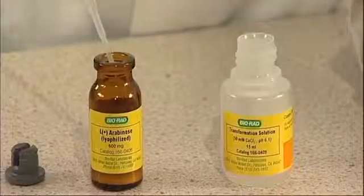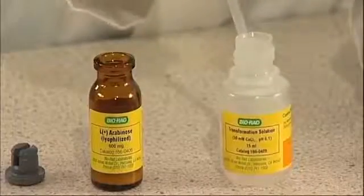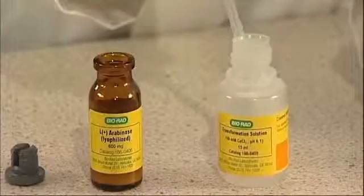With a fresh transfer pipette, rehydrate the arabinose in 3 ml of transformation solution. This will take about 10 minutes to dissolve. You can speed up the process by warming the bottle at 37 Celsius.